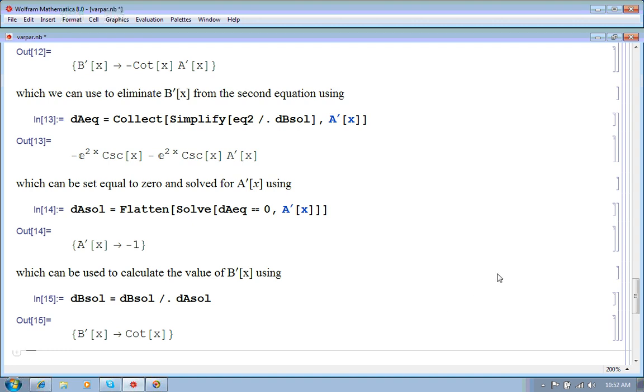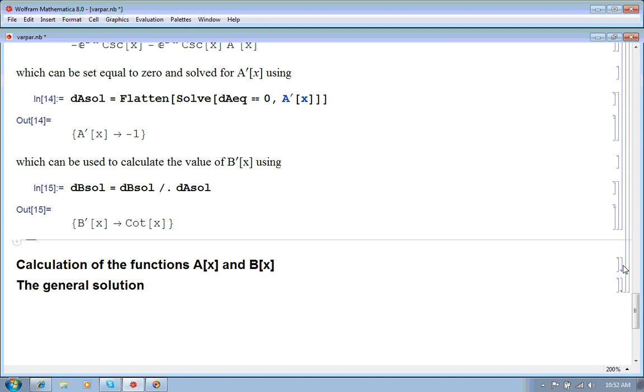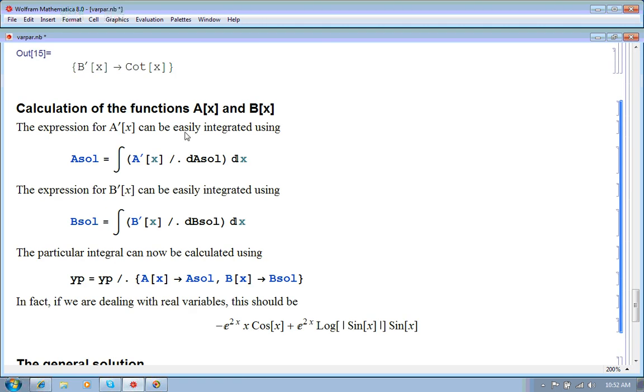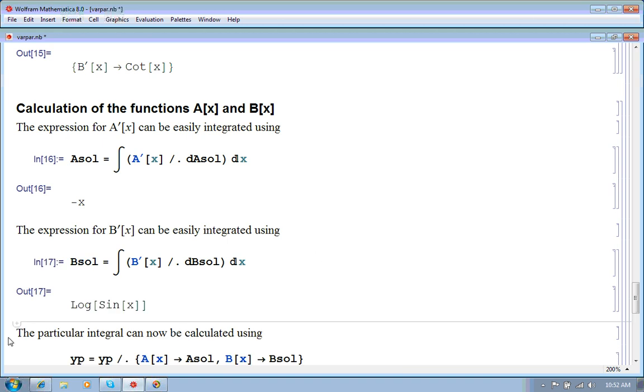So, we found those and now we need to find A and B, which we can do by integration. So, let's do that. So, we take our A prime function and we integrate it using this and we just get minus x. And then we do the same with our B prime and we get this.